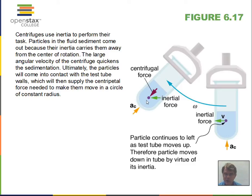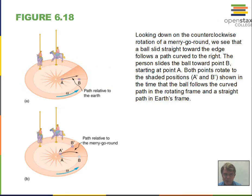Inertia plays a key role. More massive particles want to continue in a straight line more strongly; less massive particles are more easily turned — more easily accelerated. More massive particles are harder to accelerate, so they end up on the outside of the circle.